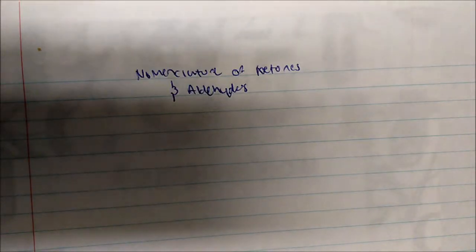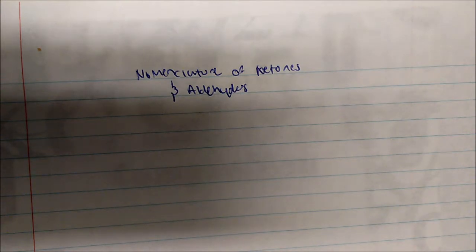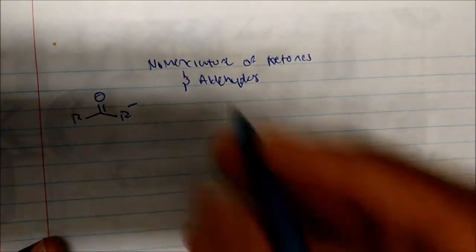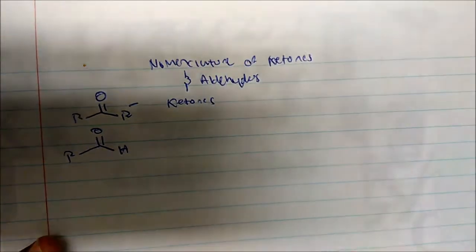In this video, I'm going to talk about the nomenclature of ketones and aldehydes. We generally define ketones as some R with a carbonyl that's bonded to an R prime, another R group. And we generally define aldehydes as some R bonded to a carbonyl and an H.